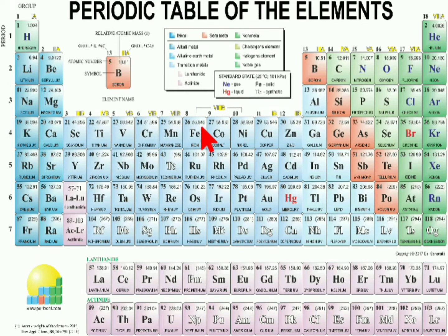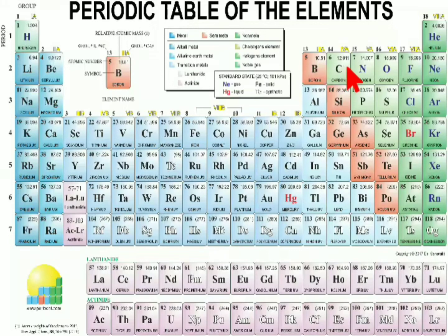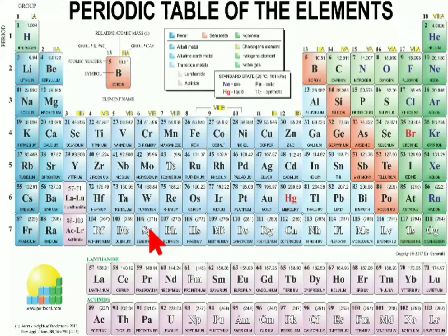The first period contains only two elements. The second, third, fourth, fifth, sixth, and seventh periods follow. The vertical columns from top to bottom are called groups. There are 18 groups: group 1, group 2, groups 3 to 12, group 13, 14, 15, 16, 17, and group 18. Group 18 is called the zero group elements, or noble gases. At the bottom of the periodic table are the lanthanides and actinides, called the inner transition elements.